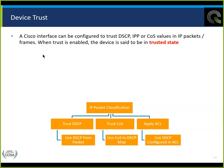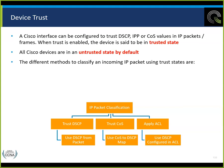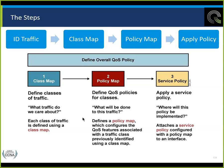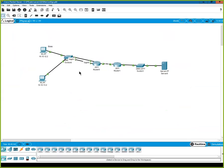Device trust: the Cisco interface can be configured to trust the DSCP, IPP, or class of service in IP packet frames. When enabled, the device is in a trusted state. All Cisco devices are in an untrusted state by default. Methods to classify incoming trust states: configure the interface to trust the DSCP value, trust the COS-to-DSCP map, or apply a standard or extended access control list. The process: identify the traffic, classify the traffic, write a policy, then apply the policy.